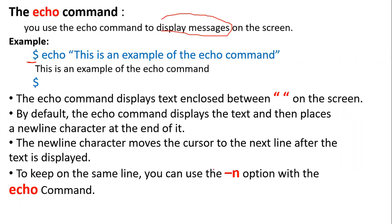The text placed in quotation marks after the echo command will be displayed on the screen. By default, the echo command displays the text and then places a newline character at the end. The newline character moves the cursor to the next line after the text is displayed. To suppress the newline, you can use the hyphen-n option with the echo command.